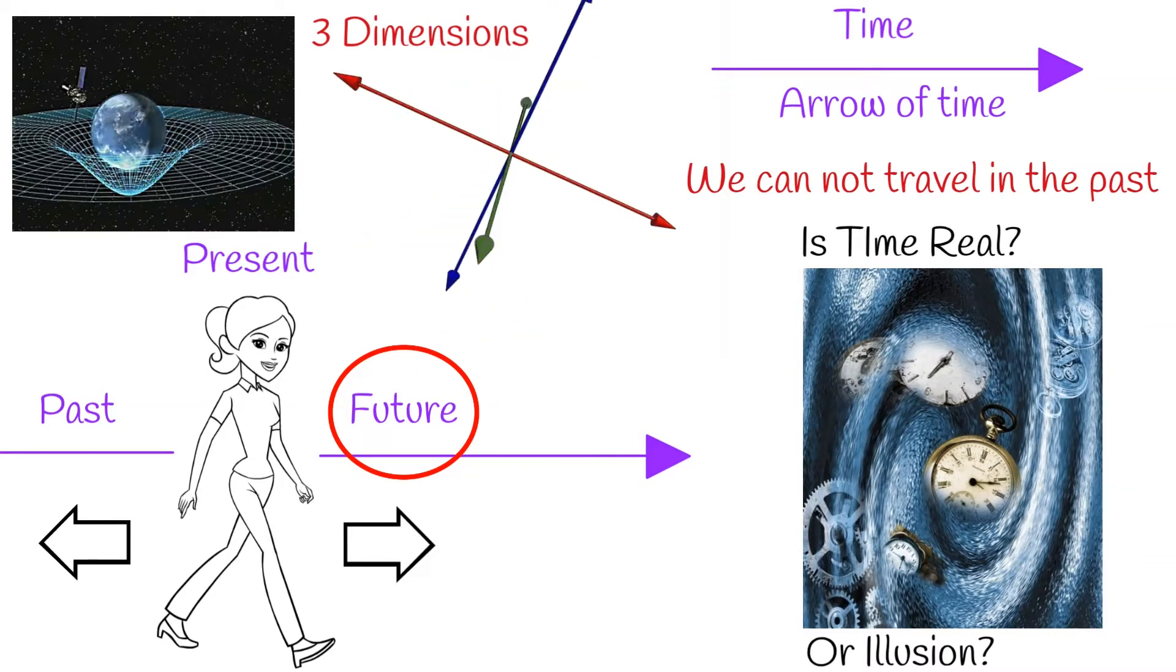Among scientists, there is no absolute consensus what is time. Or is time really exist? Or is it illusion?